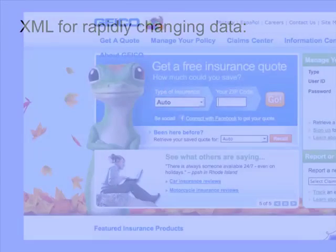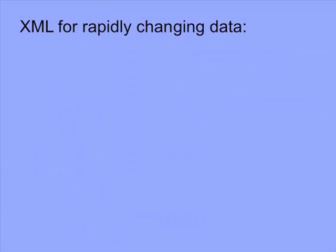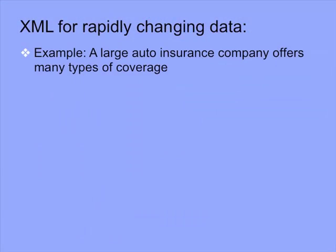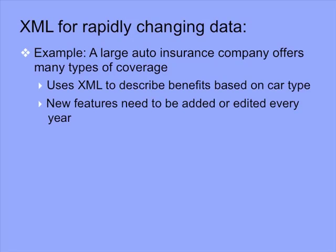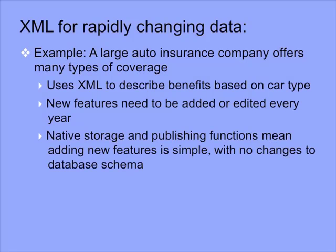Here's a typical scenario in the insurance industry. A large auto insurance company offers many types of coverage. It uses XML to describe benefits based on car type. New features need to be added, removed, or edited every year. With native storage and publishing functions, adding new features is simple, with no changes necessary to the database schema.